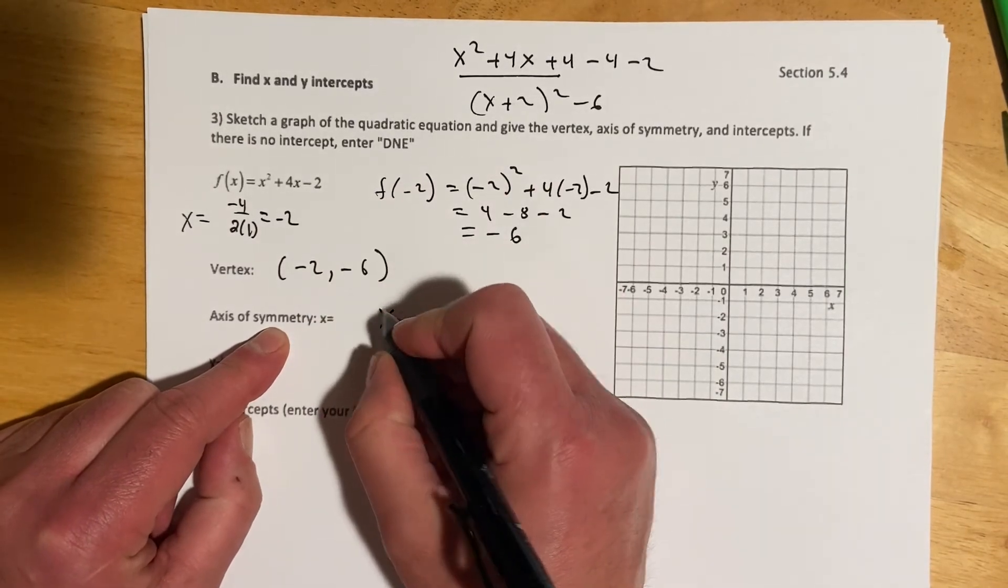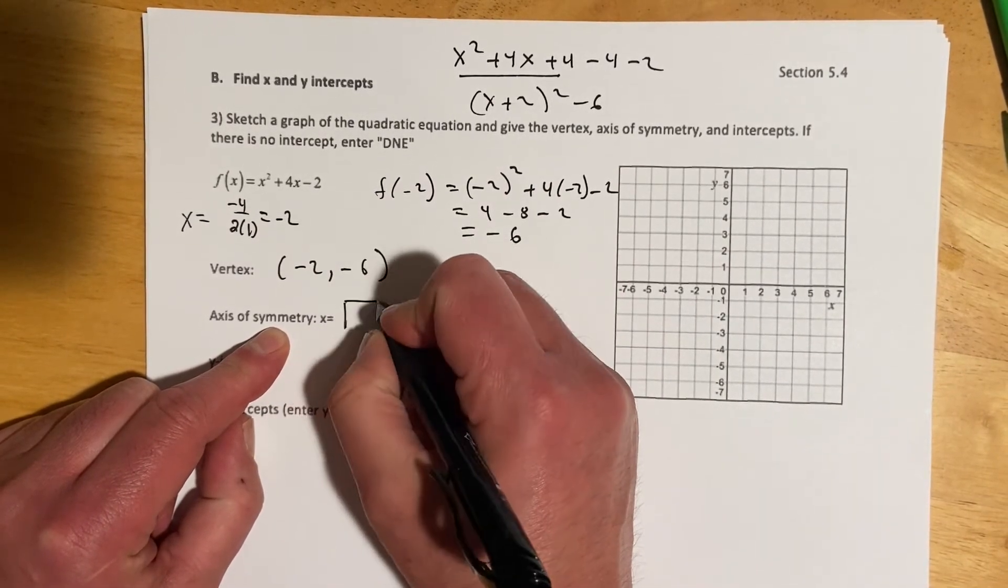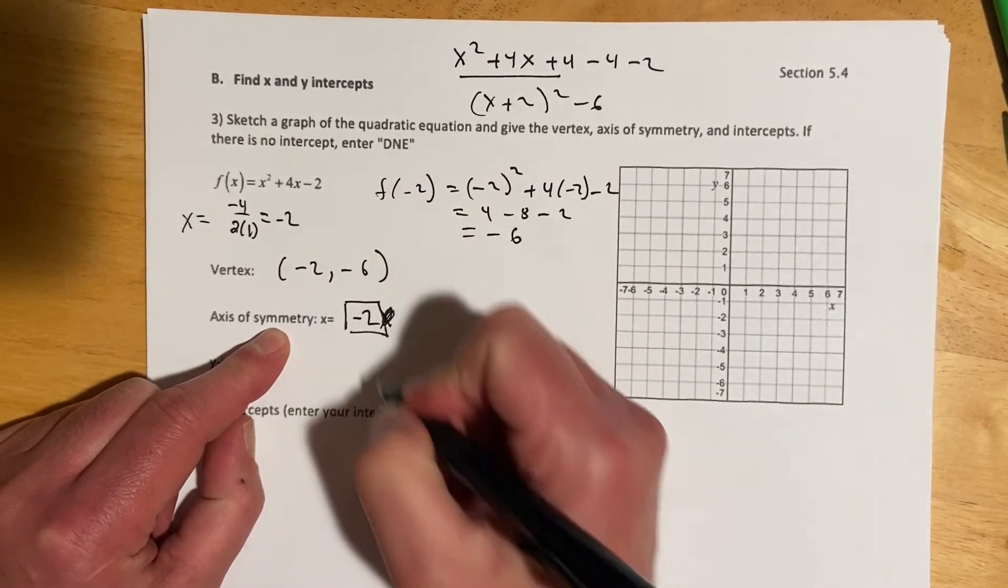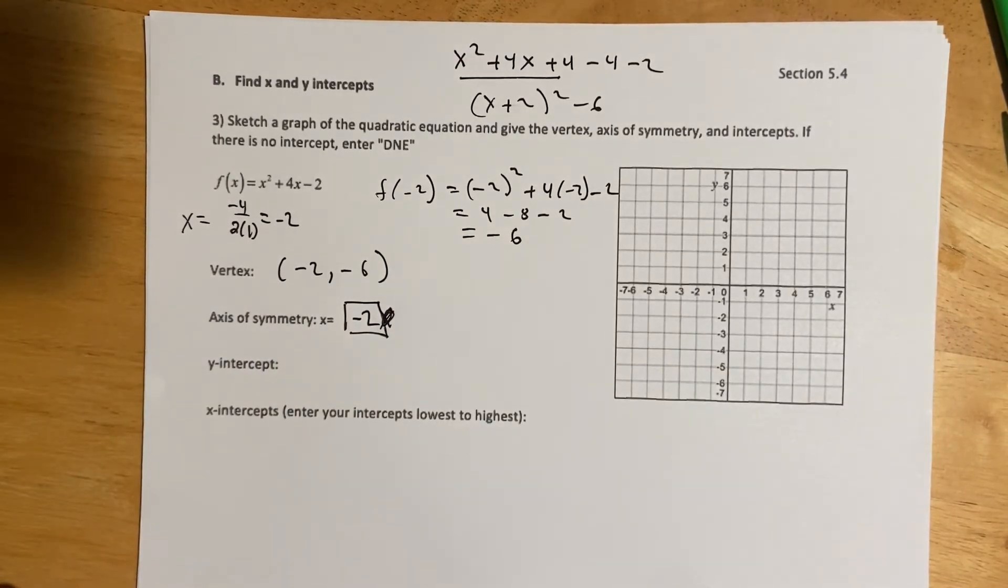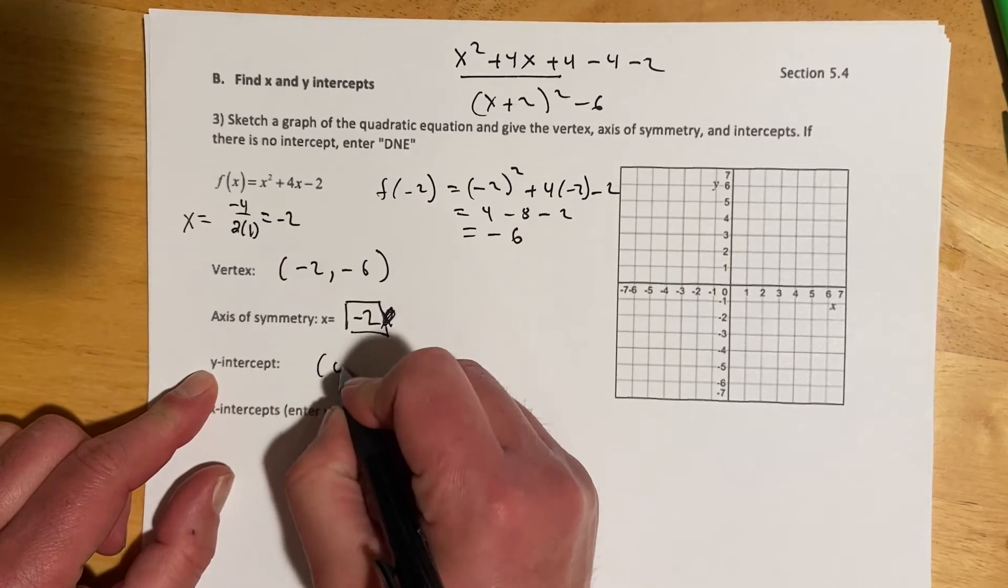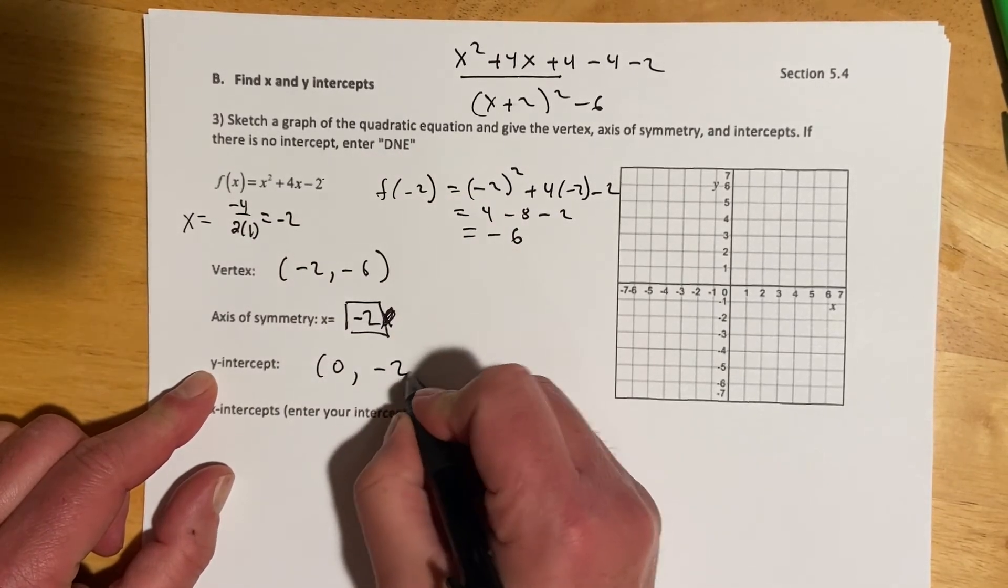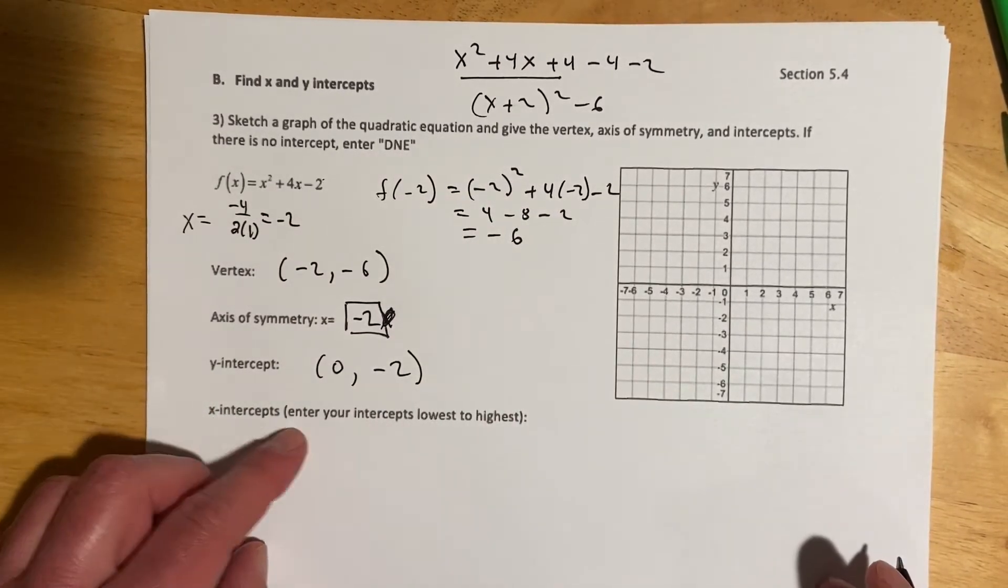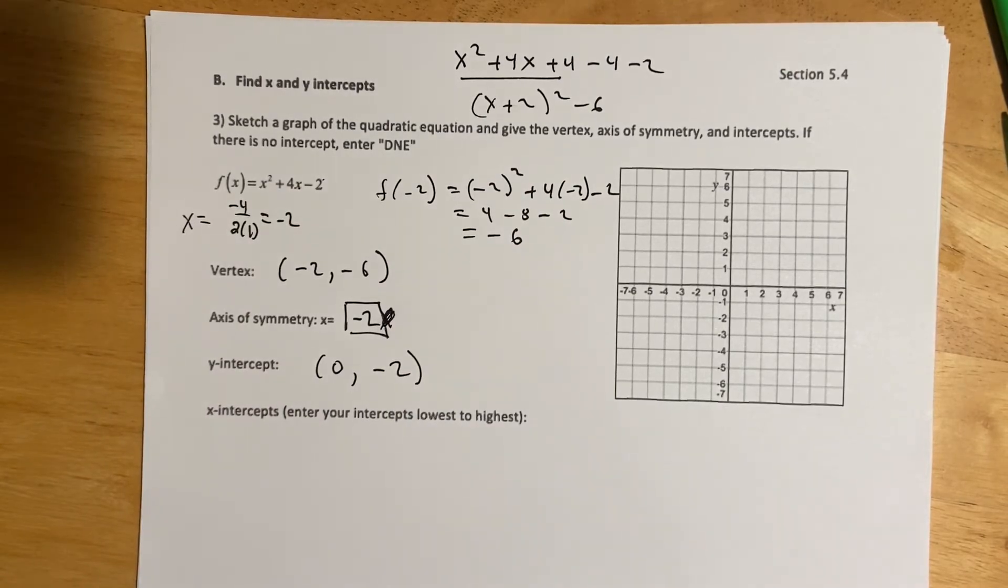Axis symmetry, that would be, oh, this time it does have the x equals on the particular problem, so there would be a box there. And at the time you get to just type the negative 2. Y intercept, again, when x is 0, it's that value on the end, negative 2. And then x intercepts, and your answer, lowest to highest.